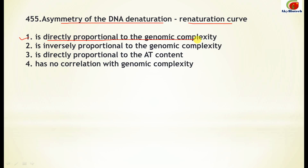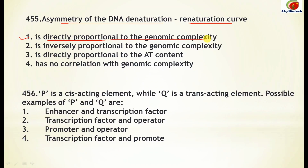Question 455: Asymmetry of the DNA denaturation-renaturation curve is directly proportional to the genomic complexity. This question is very important and has appeared in examinations many times. Question 456: P is a cis-acting element while Q is a trans-acting element — give examples of P and Q. The cis-acting element is the enhancer, and the trans-acting element is the transcription factor.